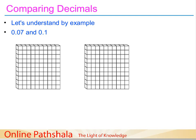Hi and welcome to the next video in the series about decimals — how to represent decimal numbers and how to convert fractions to decimals and decimals back to fractions. In this video, we'll be discussing how to compare decimals: which decimal is smaller than the other. The first example has two decimal numbers: 0.07 and 0.1.